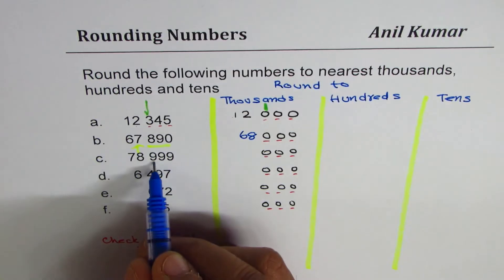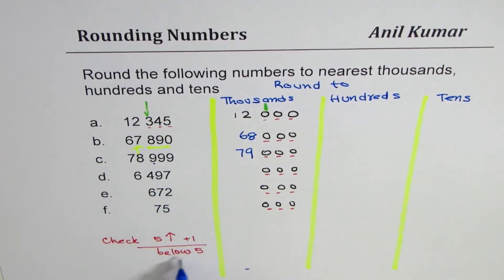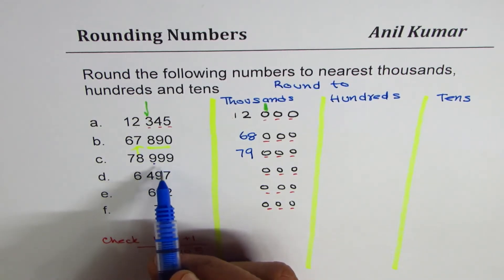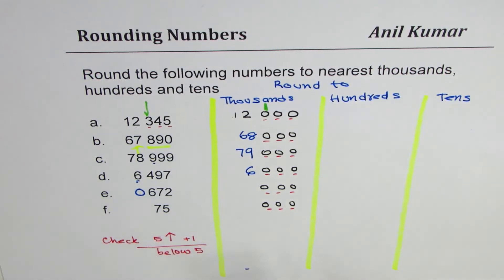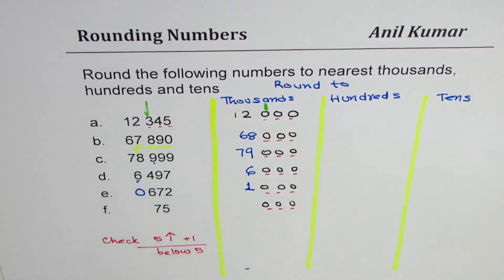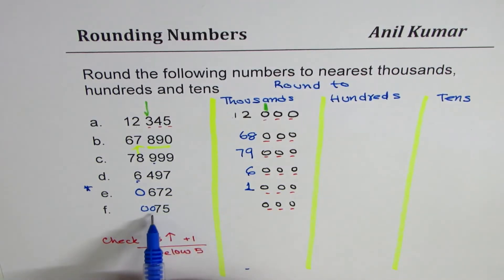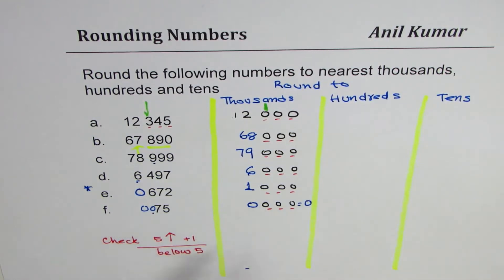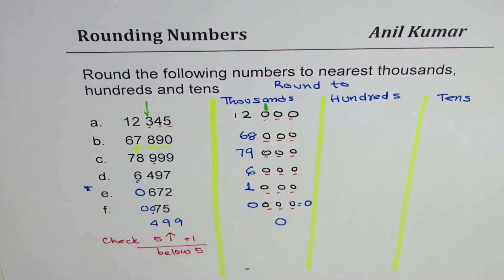For 79,964 — check hundreds digit, it is nine, more than five, so it becomes 80,000. For 6,497 — the hundreds digit is four, less than five, so just copy six. We get 6,000. For 672 — there is no thousands digit, assume zero. The hundreds digit is six, which is five or more, so we make zero into one — it becomes 1,000. For 75 — we have zero in hundreds place, so it remains zero. But 672 rounds to 1,000. Any number less than 500 will round to zero — for example, 499 rounds to zero.